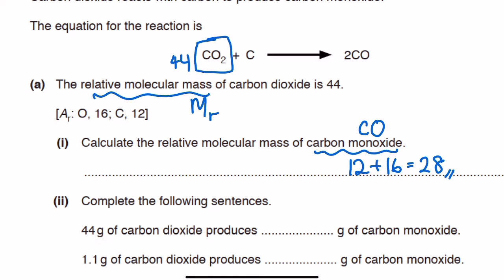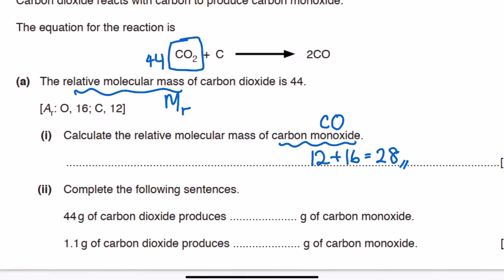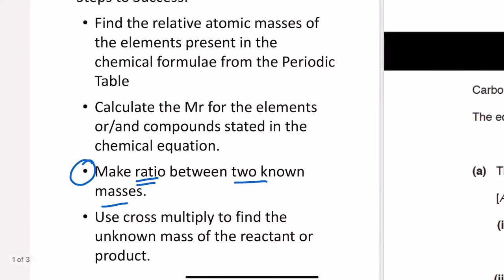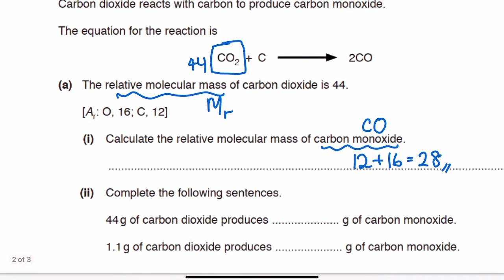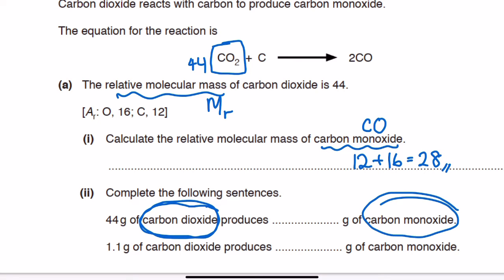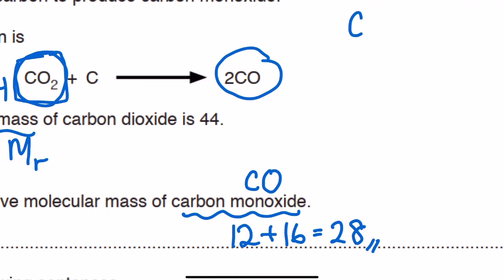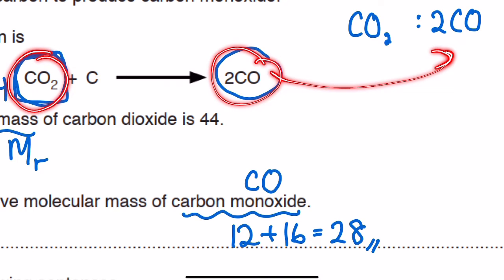Following step three, we make a ratio between two known masses — between carbon dioxide and carbon monoxide. Circling those two in the equation, we carry the ratio here: CO₂ to 2CO, as shown in the chemical equation.